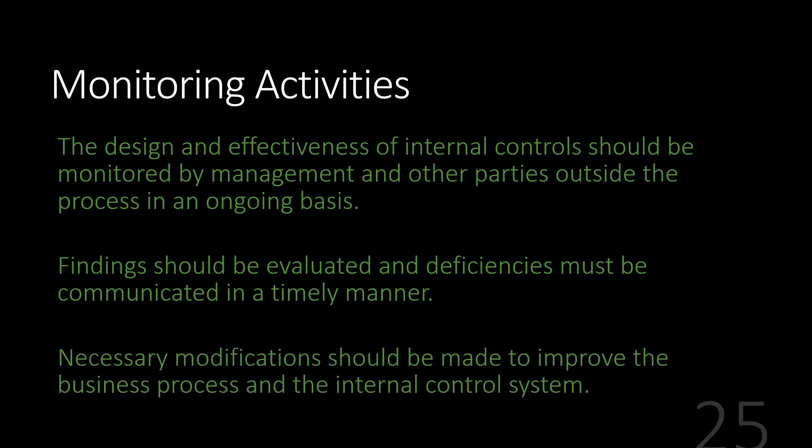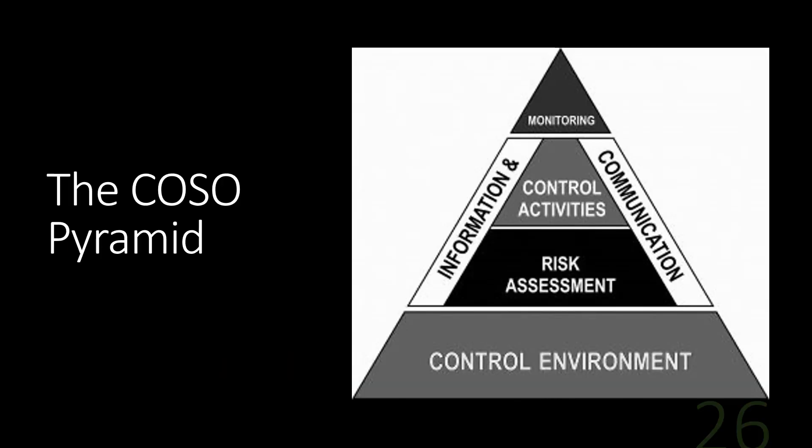That is the COSO internal control framework in a nutshell. You'll often see it depicted as a pyramid, where the control environment sets the foundation, followed by risk assessment, control activities, and monitoring, with information and communications serving as the mortar that holds things together.